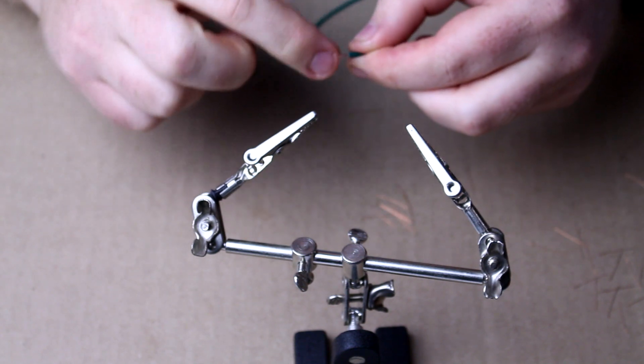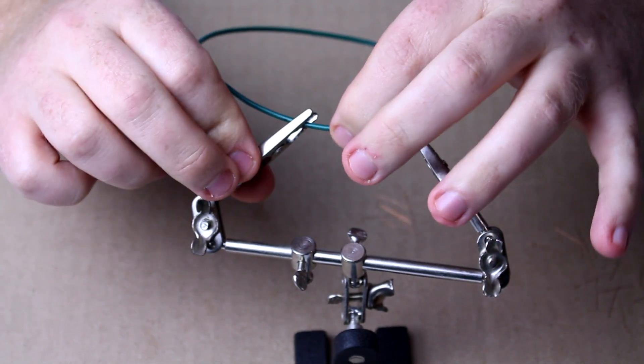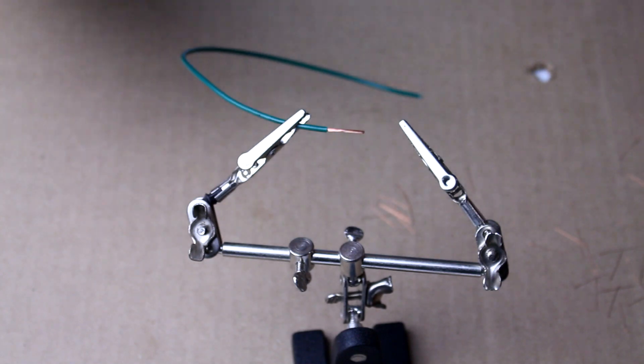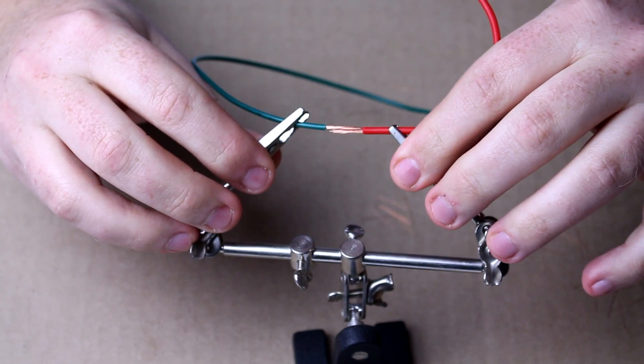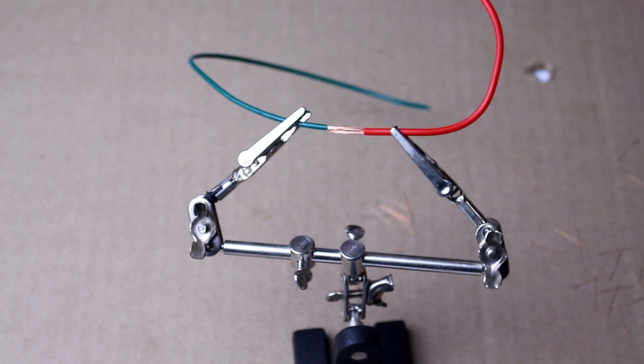The first one I'm going to show you is a temporary solder and if you do the second one that I show you it's a stronger joint but it's much harder to take apart. So I've stuck the two wires next to each other. I haven't twisted them together or anything.